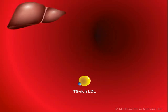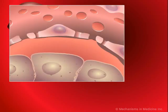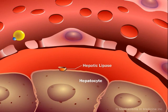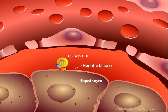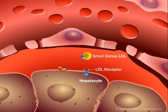Triglyceride-enriched low-density lipoprotein particles are transported by the blood to the liver. When these triglyceride-rich LDL particles arrive at the liver, they are further modified through the action of hepatic lipase. This enzyme removes the triglycerides, causing the particles to break apart into three components: free fatty acids, monoglycerides, and the now small-dense low-density lipoproteins.